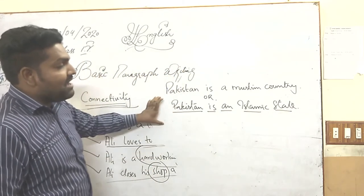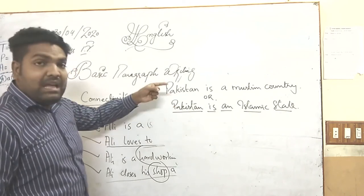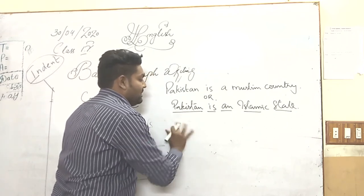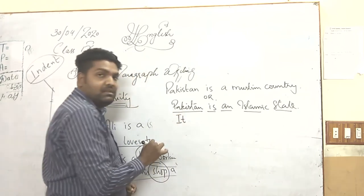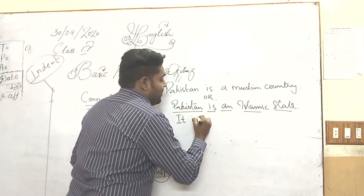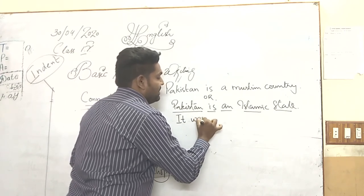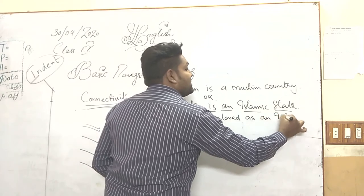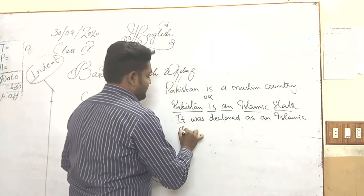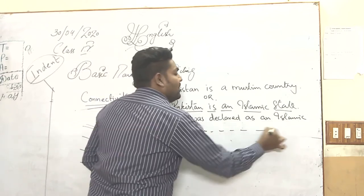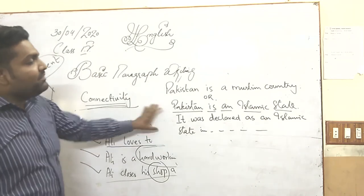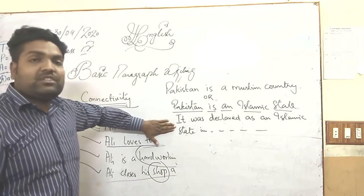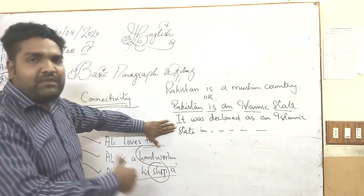In the first sentence I have mentioned that Pakistan is an Islamic state. In the second sentence I have to write that Pakistan — it was declared as an Islamic state in whatever year the history tells you. First I declared that Pakistan is an Islamic state, then I mention that it was declared an Islamic state in a specific year.